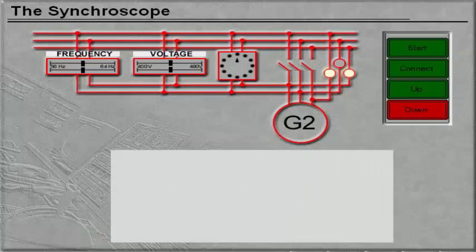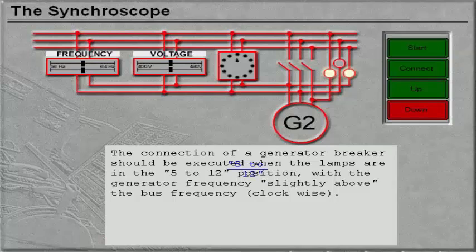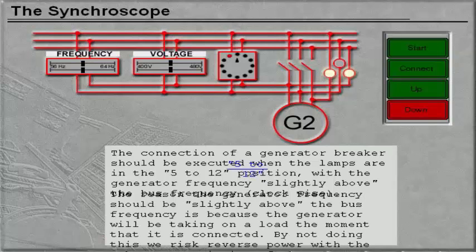The connection of a generator breaker should be executed when the lamps are in the 5-12 position, with the generator frequency slightly above the bus frequency, clockwise. The reason the generator frequency should be slightly above the bus frequency is because the generator will be taking on a load the moment that it is connected. By not doing this, we risk reverse power with the subsequent tripping of the generator breaker.